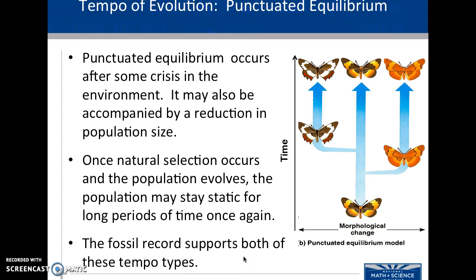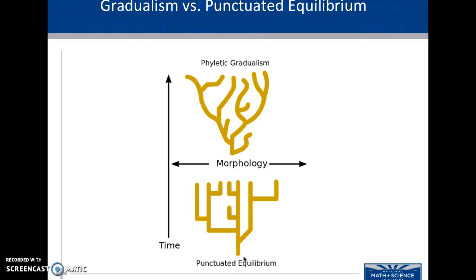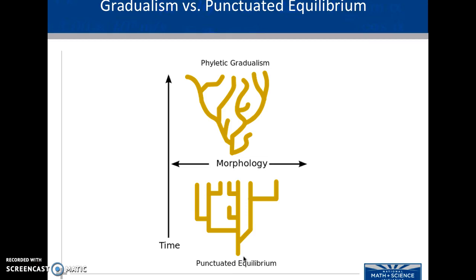Fossil records support both of these theories. There's no true answer to which is the case, although there is more evidence for gradualism. Gradualism involves lots and lots of changes slowly over a long time, while punctuated equilibrium involves a very specific change with lots of stasis in between.